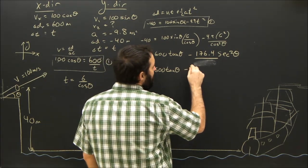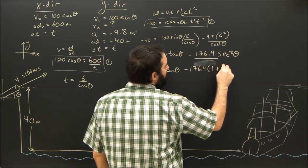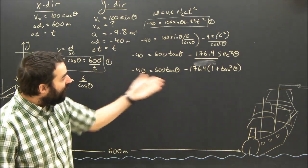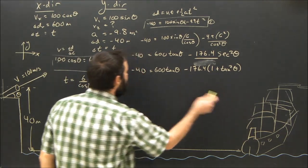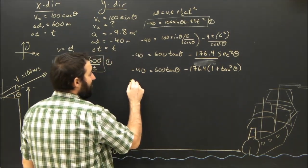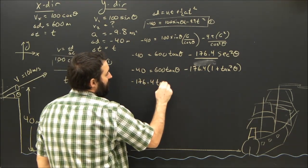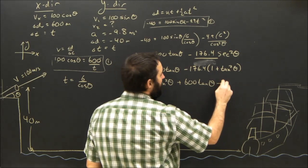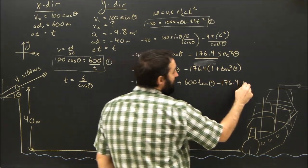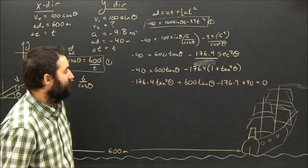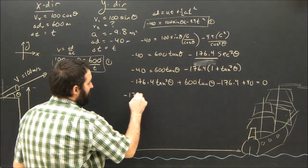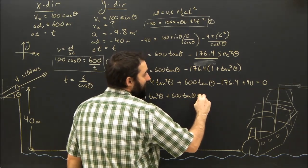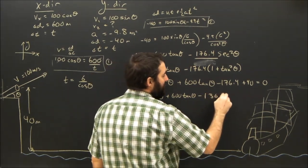So we can say minus 176.4 times 1 plus tan squared theta. So a little bit of trig identity action, a little bit of math problem. But once we've solved that now, I think we can simplify and solve this in pretty straightforward. We can see that, let's multiply that guy out. We get negative 176.4 tan squared theta plus 600 tan theta minus 176.4 plus 40 equals 0. So I'll move the 40 over there. And that will give me negative 176.4 tan squared theta plus 600 tan theta minus 136.4 equals 0.